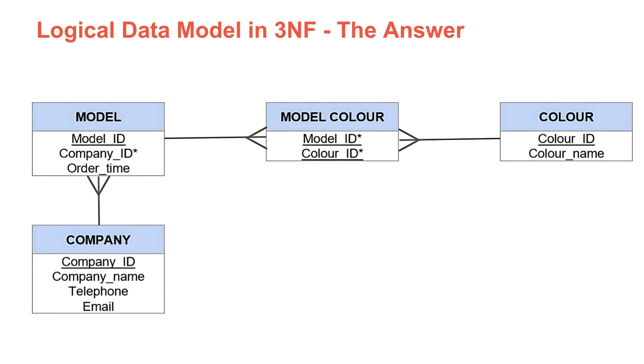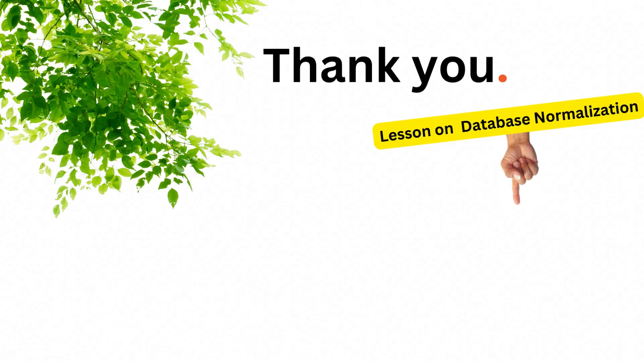Here is the complete logical data model in third normal form — this is the answer. Remember to show the relationships between tables correctly, to underline the primary keys, and to place an asterisk at the end of the foreign keys. I hope you understand how to get your answer in this type of question and what you need to remember to mark. I've linked the normalization theory video here as well. To your left is the full list of lessons on topic 12, and to your right is the normalization theory video. Good luck, everyone — let's meet again with a new lesson. Thank you.